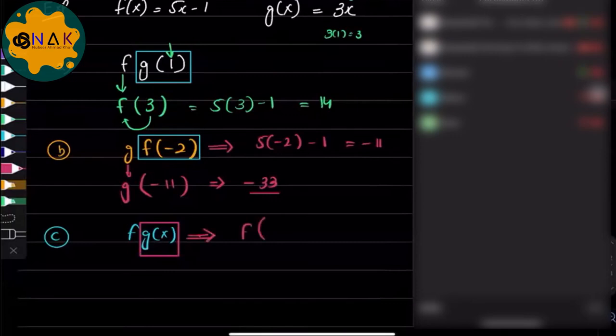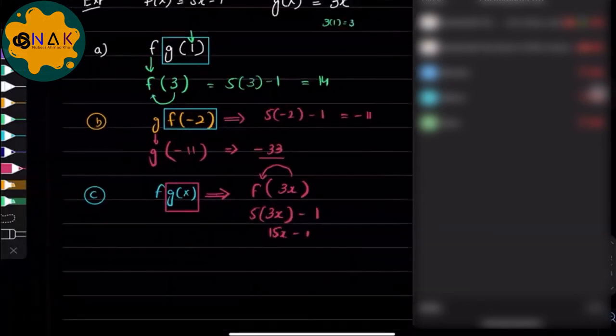Good. So in place of this box g(x), I will write it down the equation for that function which is three of x. Now substitute this value 3x in the function of f, so f was five bracket 3x minus one, so final answer would be 15x minus one. Did you understand this one?